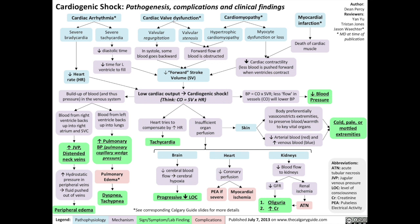Second, cardiac valve dysfunction. Valvular regurgitation means that in systole, when the ventricles are contracting, some blood goes backwards, reducing the stroke volume and reducing cardiac output. With valvular stenosis, the forward flow of blood is obstructed, which reduces stroke volume and reduces cardiac output.